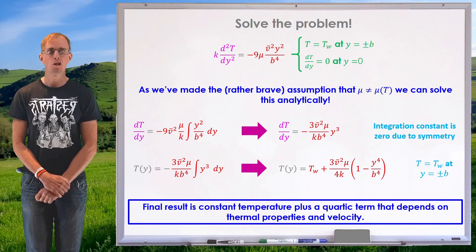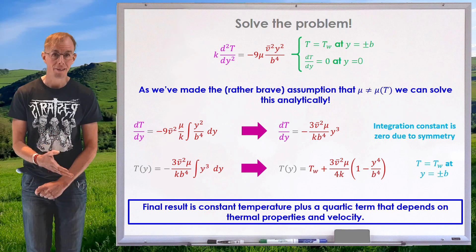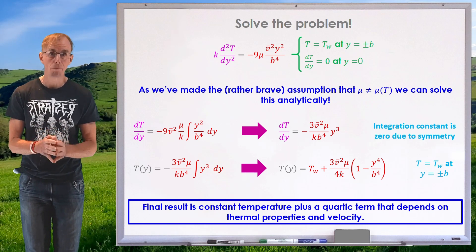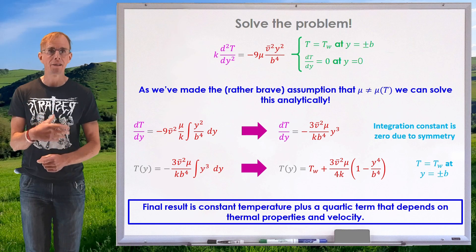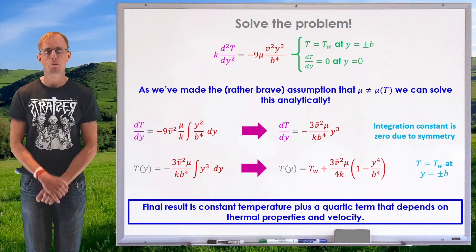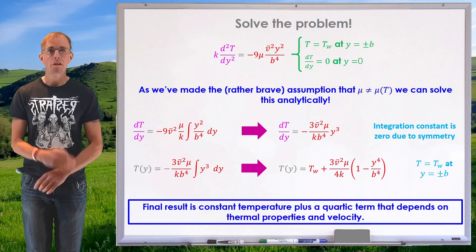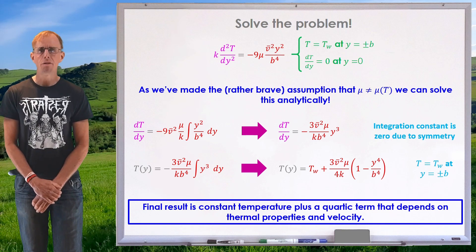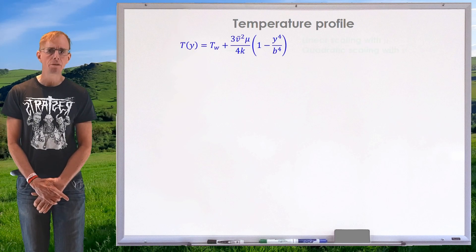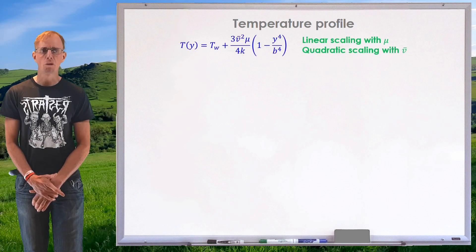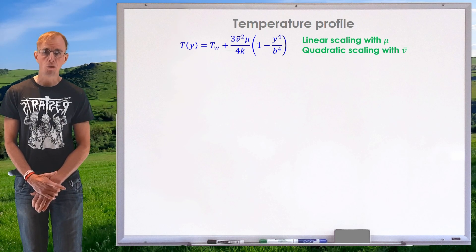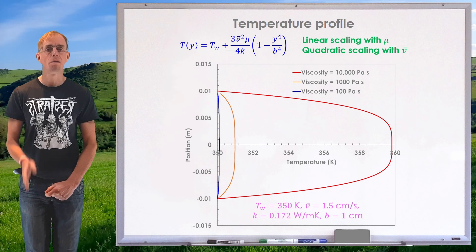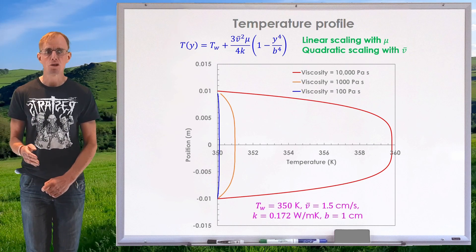We can only reach this analytic solution because of the assumption that viscosity is not a function of temperature. This solution still has value because in a numerical simulation we can turn off the viscosity-temperature dependence and compare this idealized analytical solution to whatever numerical solution we've computed — if they match, the code is mostly correct. The solution shows linear scaling with mu, quadratic scaling with v-bar, and quartic scaling with y. Let's plot out various temperature profiles.